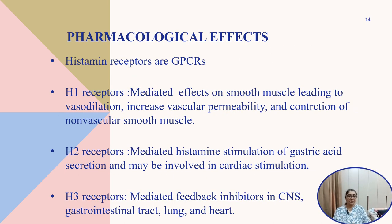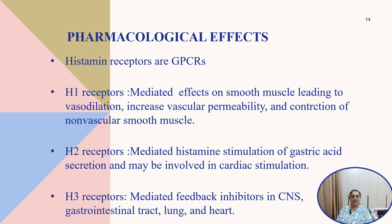Pharmacological effects of histamine act through G protein-coupled receptors (GPCR). H1 receptor-mediated effects on smooth muscle include vasodilatation, increased vascular permeability, and contraction of vascular smooth muscle. H2 receptor-mediated effects include stimulation of gastric acid secretion and possible involvement in cardiac stimulation. H3 receptor-mediated effects produce feedback inhibition in the CNS via pre-synaptic neurons, with effects also in the gastrointestinal tract, lung, and heart.